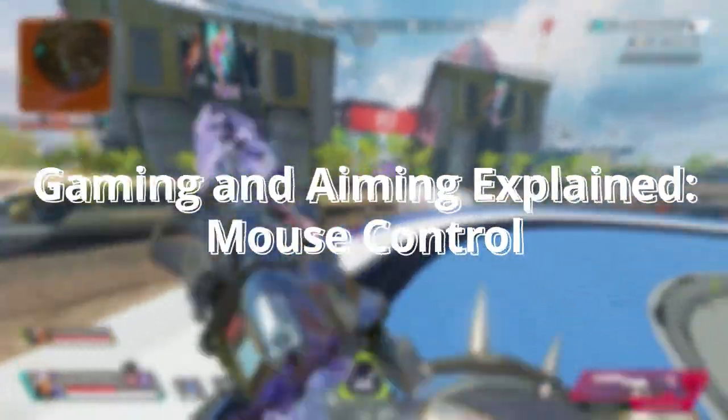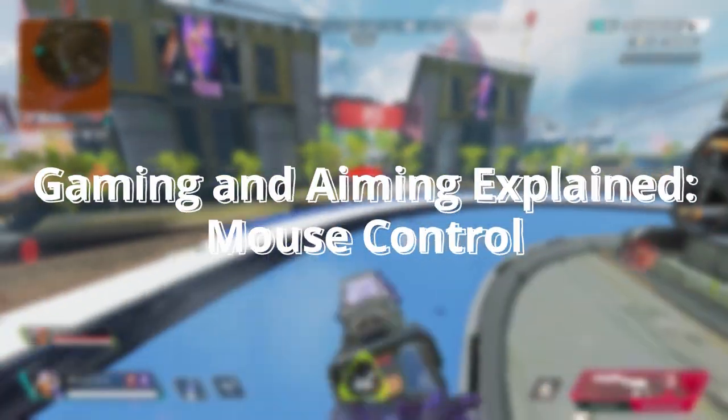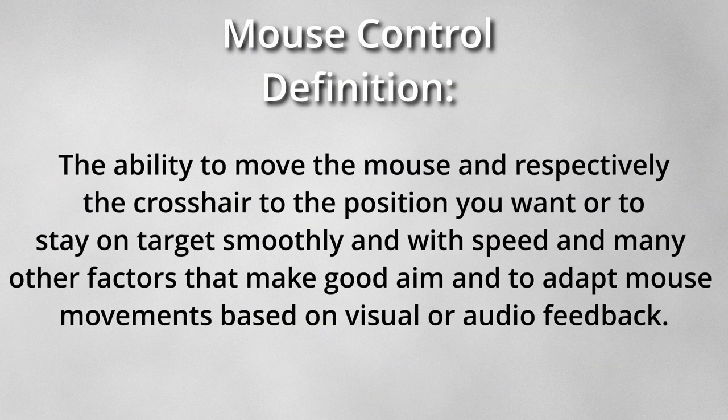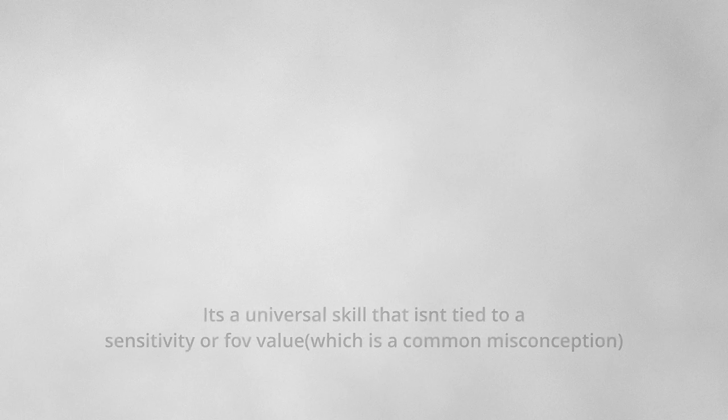Welcome to the first weekly or bi-weekly episode of Gaming and Aiming Explained. Today we'll be covering mouse control. Mouse control is the ability to move your mouse — and respectively the crosshair — to the position you want, or to stay on target smoothly and with speed and many other factors that make good aim, and then to also adapt mouse movements based on visual or audio feedback.